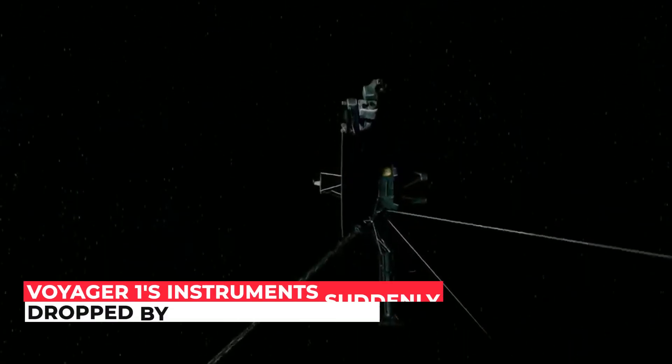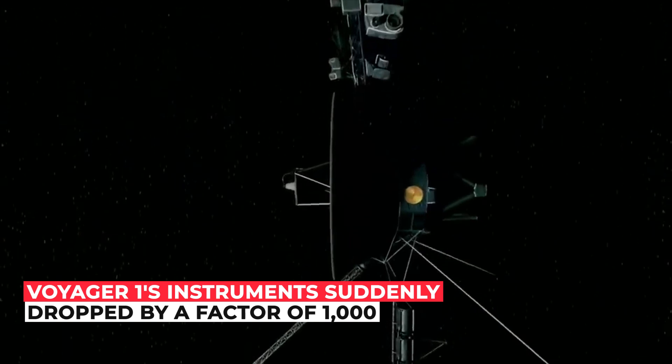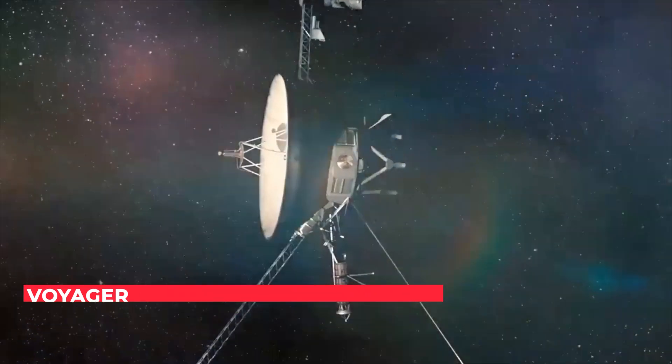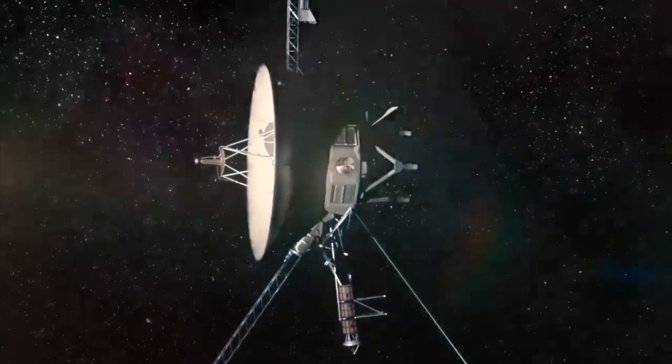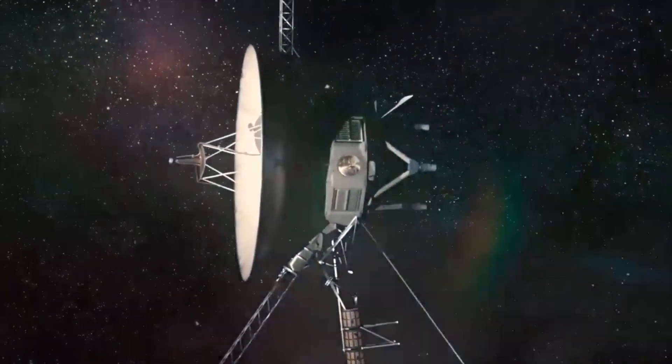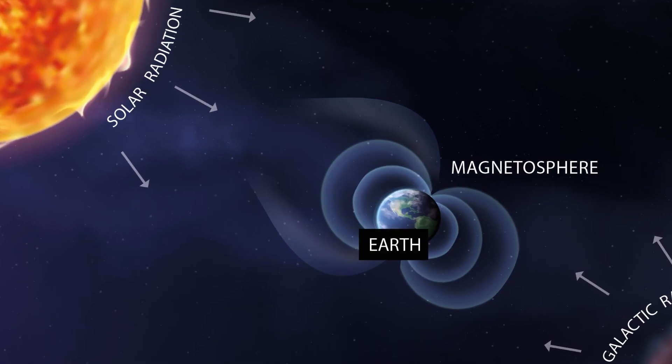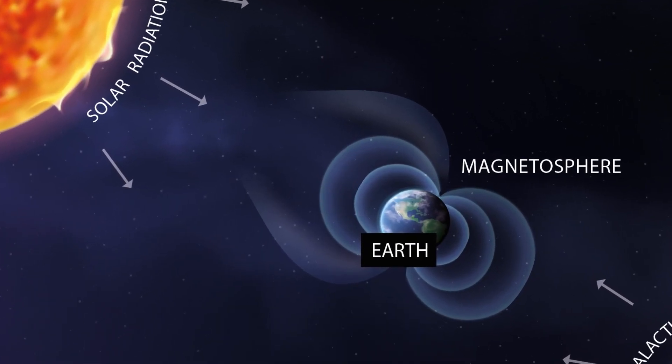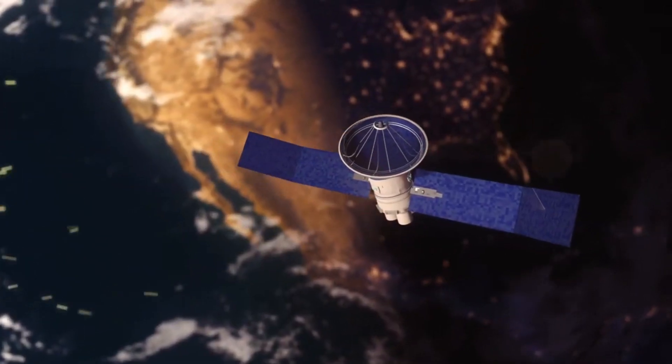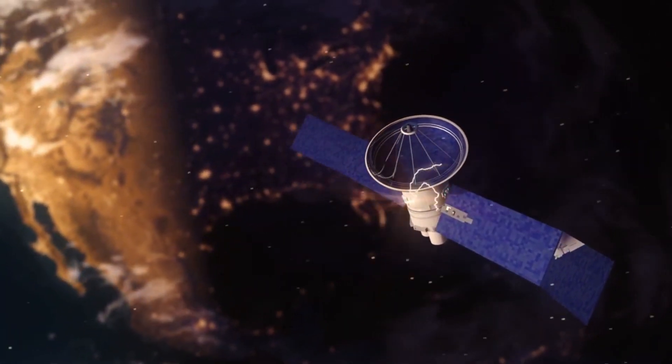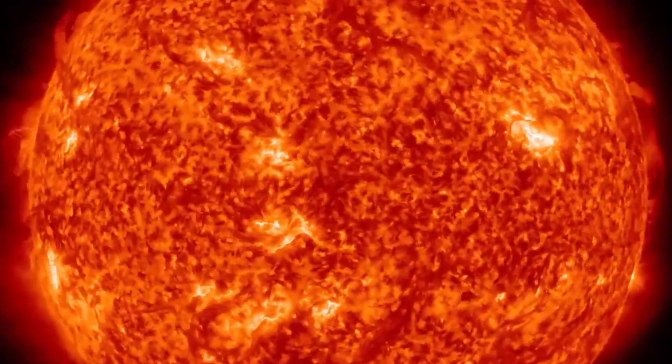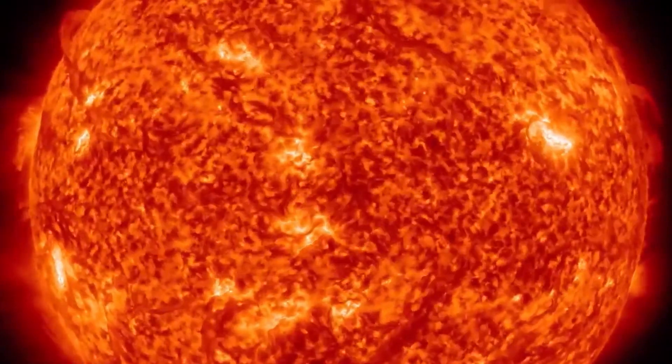The solar wind indicated by Voyager 1's instruments suddenly dropped by a factor of 1,000, making it virtually undetectable. The transition was extremely quick, taking only a few days. At the same time, measurements of galactic cosmic rays increased significantly, which is exactly what we would expect if we were outside the solar wind, according to Caltech physicist Ed Stone, Voyager's project scientist. It appeared that Voyager 1 had left the Sun's influence.